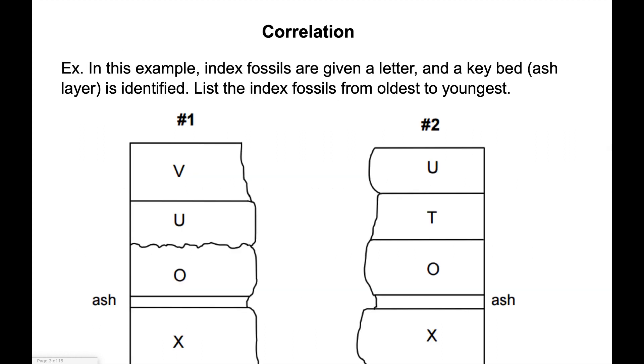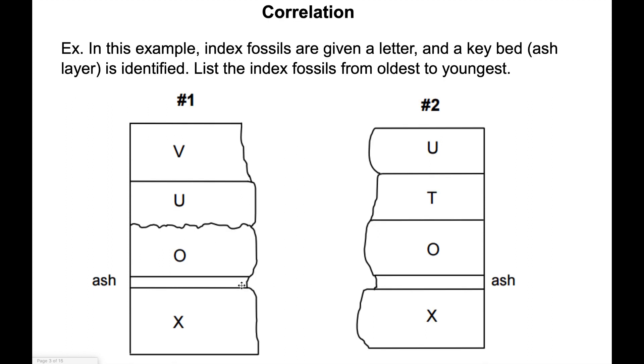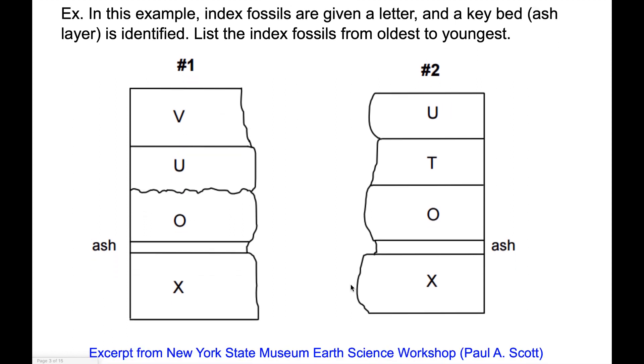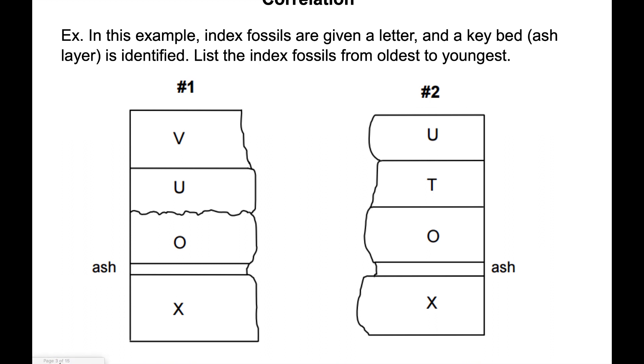In this example, we can see a bunch of layers of horizontal sedimentary rock, and in each of these sedimentary rocks there's an index fossil. The index fossils have been given a letter, and there's also a key bed which is an ash layer. Let's say we know the date at which this ash layer was deposited. Now what we're going to do is list these fossils, these layers, from oldest to youngest. One of the things I like to do when I'm analyzing something like this is I like to draw some straight lines just to connect the different layers.